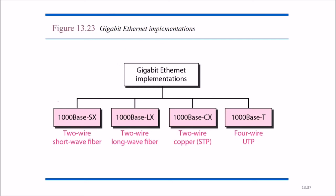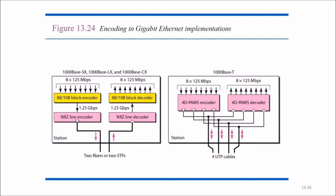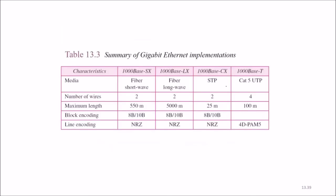These are gigabit Ethernet implementations: 1000BaseSX, 1000BaseLX, 1000BaseCX, and 1000BaseT. This is two wire short wave fiber. This is two wire long wave fiber. This is two wire copper, C for copper, and this is four wire UTP, T for UTP. This is the encoding gigabit Ethernet implementation for two fiber or two STPs in these three, and for 1000BaseT it is four UTP cables. The summary of Gbps is like this. The length you can see, it can go up to 5000 meters, that is five kilometers, fiber long wave. This is a huge improvement.